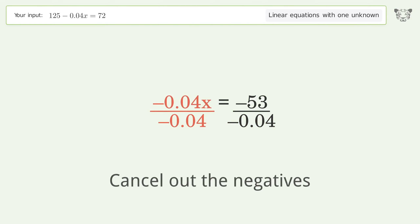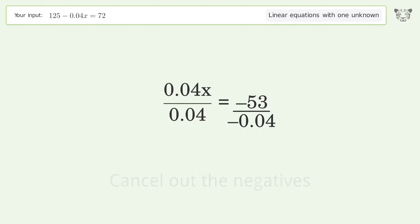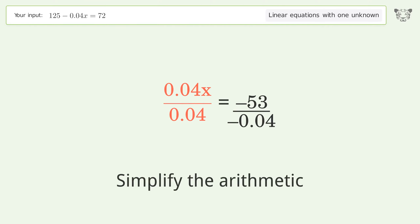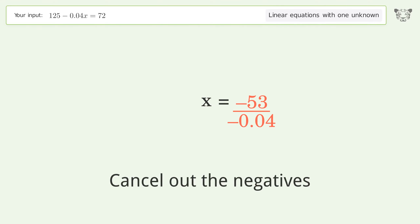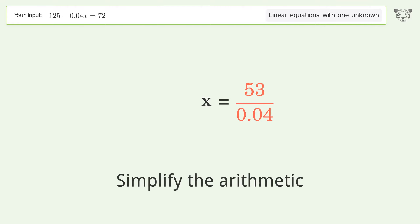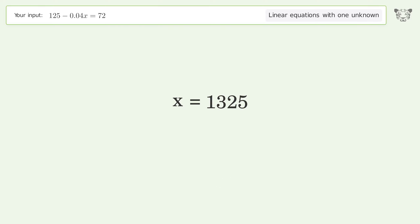Cancel out the negatives and simplify the arithmetic. Cancel out the negatives again and simplify the arithmetic. The final result is x equals 1325.